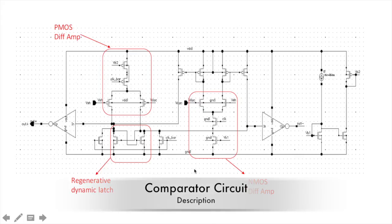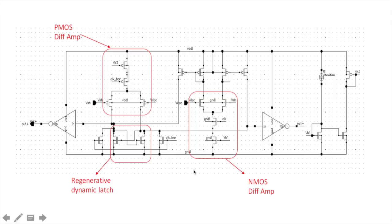Shown here is the comparator schematic. The comparator compares the sample and hold output and the DAC output. We use NMOS based differential amplifier and a PMOS based differential amplifier to capture the 1 volt rail to rail input swing. Both the DFAMs are connected in parallel. And here we use regenerative dynamic latch to provide positive feedback which can steer one node to high and another node to low.